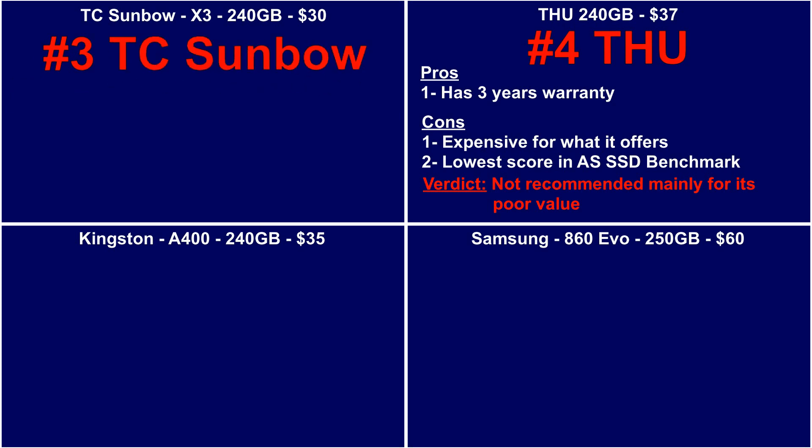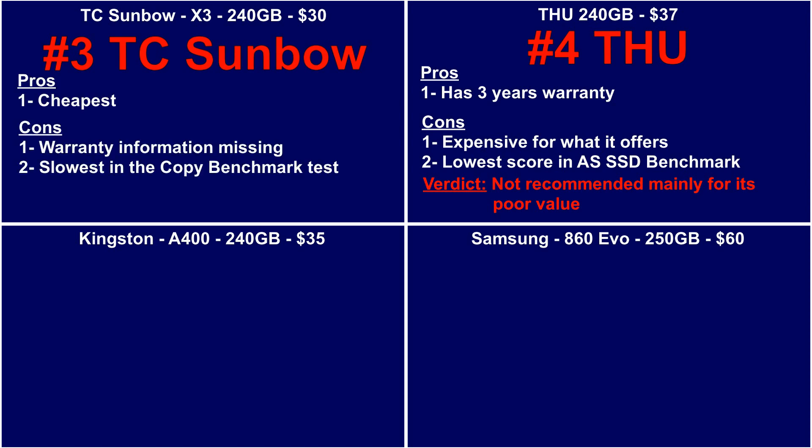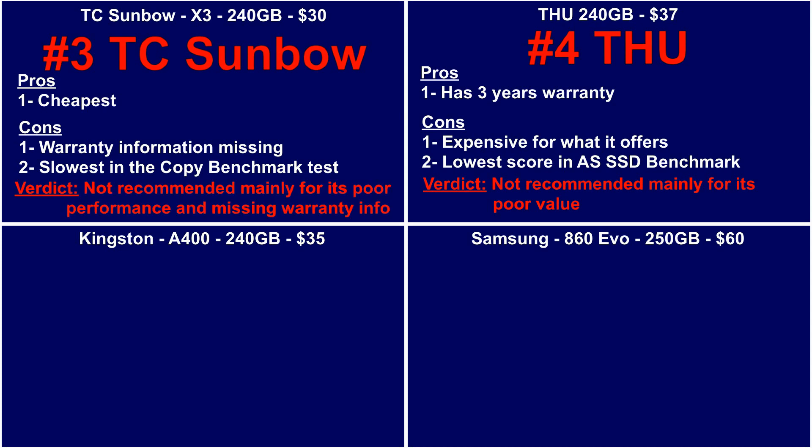Third on the list is the TC Sunbau. The pros: it's the cheapest at $30. The cons: warranty information is missing — neither on Amazon nor on the manufacturer's website. It was also the slowest in the copy benchmark test. I will not recommend it mainly for its poor performance and missing warranty info.